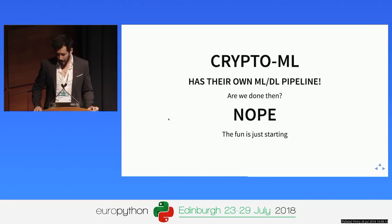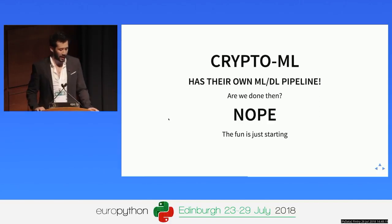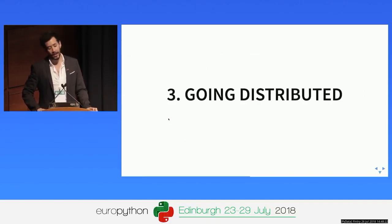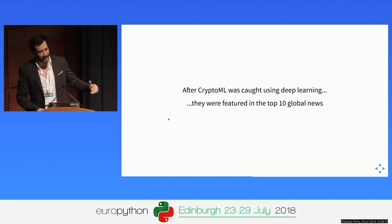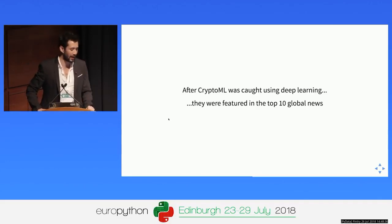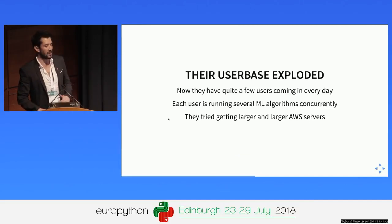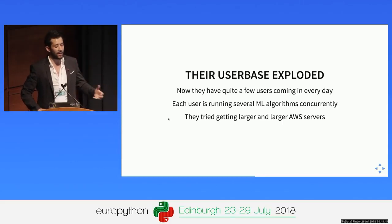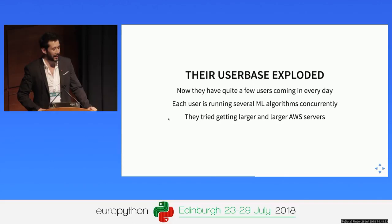Now that the CryptoML team has their deep learning pipeline, they asked themselves: are we done? The answer is no — the fun is just getting started. After CryptoML was using deep learning, TechCrunch, Mashable, and others wrote a million articles about them, and their user base exploded. Now they had tons of users coming in every day, each running several machine learning algorithms concurrently. They tried to get larger and larger single servers in AWS, but their costs were going insane and they were eating all their VC money.